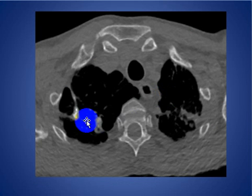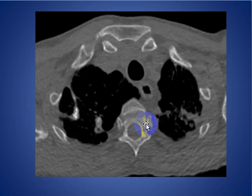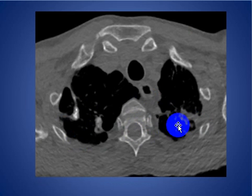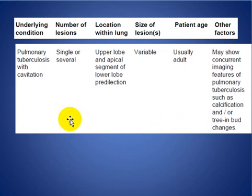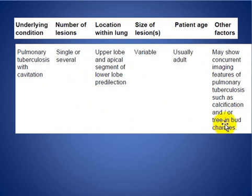This is the same patient on a higher cut in the mediastinal window. You will see the cavitation and calcification. We should look at where the dominant body of the cavity is, along with associated signs such as calcification, tree-in-bud pattern, and whether the patient is a child or young adult.